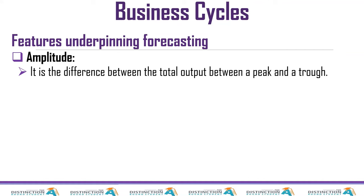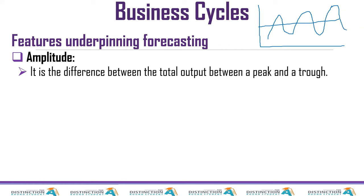Moving on to amplitude. I'm going to draw another business cycle model with a trend line. The amplitude is the vertical distance between a peak and a trough — measured from a trough to a peak. Just like the previous example where we assumed we are in February, we can take this trough-to-peak distance, place it forward, and predict that the future will follow a similar intensity pattern.